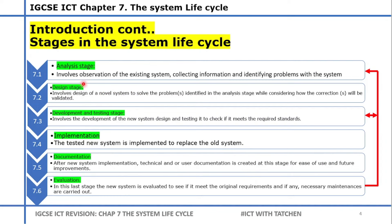At the analysis stage, it involves observations — you observe the existing system. If you're looking at an old computer system you want to upgrade, you observe the properties: what are the RAM sizes, storage capacities, speeds? You collect that information, identify problems such as slow computers, and then you can be informed on what you need to do to upgrade the system.